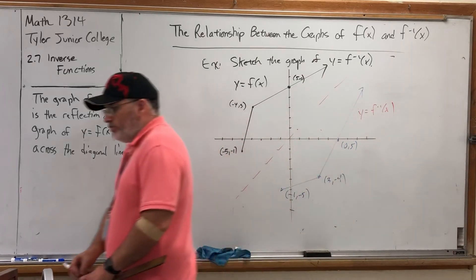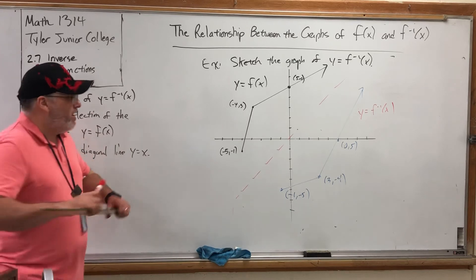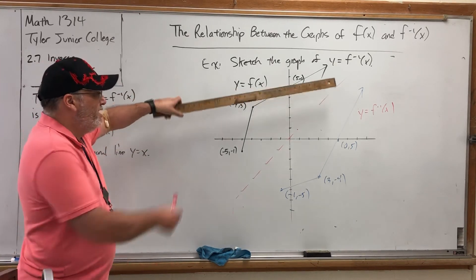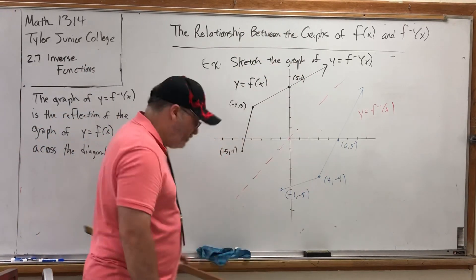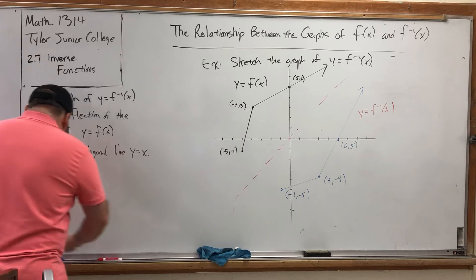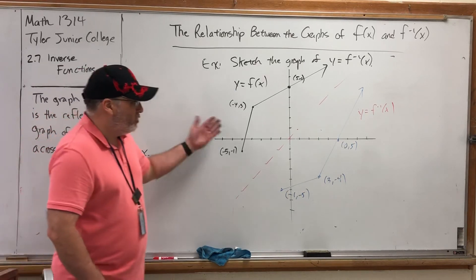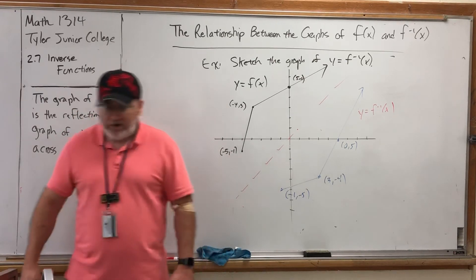Now this reflection also shows you why the horizontal line test has to work. Because if your graph fails the horizontal line test and is not invertible, that means its mirror image would fail the vertical line test and wouldn't be a function. So that's the relationship between the graph of a function and the graph of its inverse: mirror image across the diagonal line, which is equivalent to saying reverse all the ordered pairs.